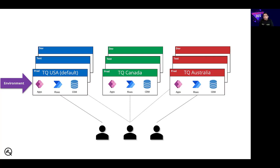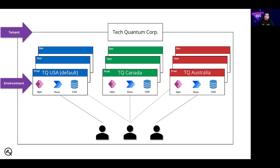What Common Data Service does is that it allows you to manage user access, security settings, and storage that are associated with the database. Now, each environment is created under a Microsoft Azure Active Directory tenant — you can also call it an Azure AD tenant — and its resources can only be accessed by users within that particular tenant.